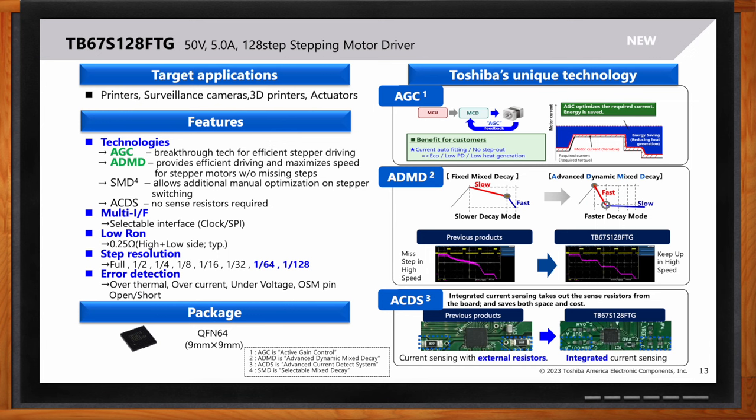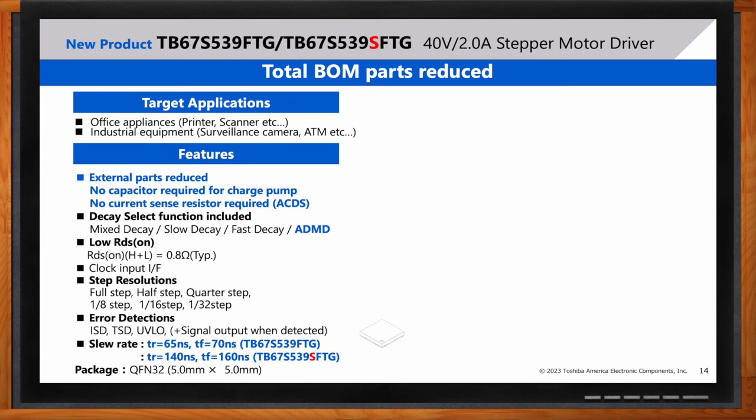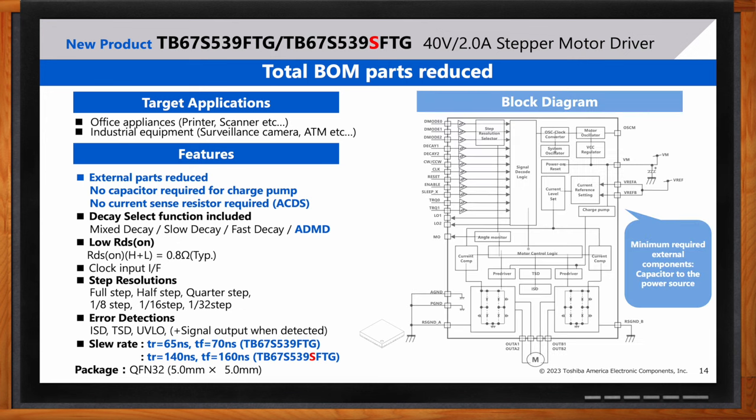Okay. So, what if my audience is looking to lower their overall BOM? Do you guys have anything to help them there? Yeah. Our TB67S539, in addition to the advanced current detection system, where we eliminate the external sense resistor, we also have a charge pump that does not require an external capacitor. So, both these features reduce external components, minimizing total BOM cost. This device also comes in two variants, each optimized for different system requirements.